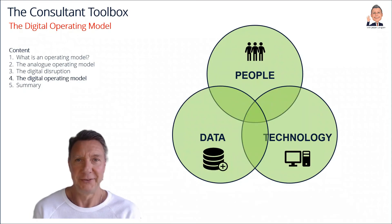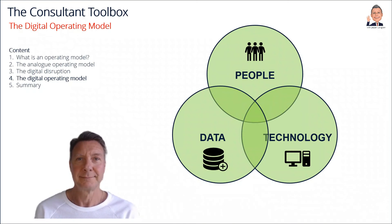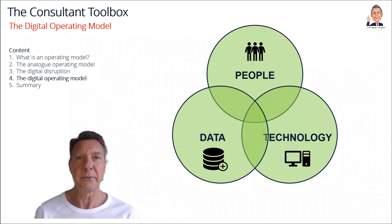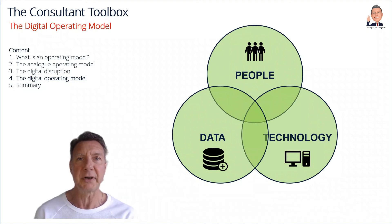And finally, the digital operating model. The difference is that we have replaced process with data. Replacing process with data doesn't mean that the process disappeared. Just as in the analog operating model you have process and you have data underneath, exactly the same thing in the digital operating model — you still have process, but you focus on data. Some of the obvious differences in organizations that have adopted a digital operating model is this data focus, data governance, and data quality, because data drives these kinds of organizations.